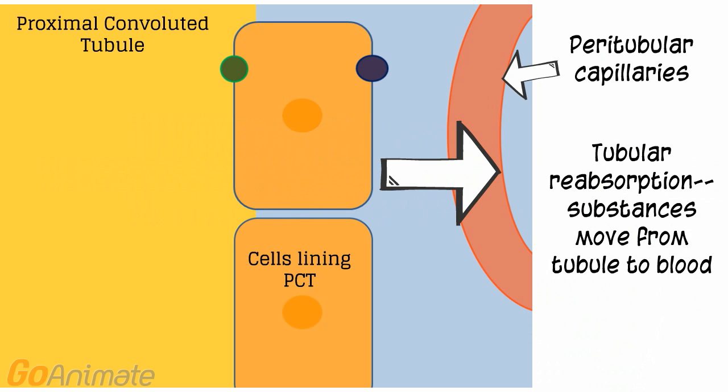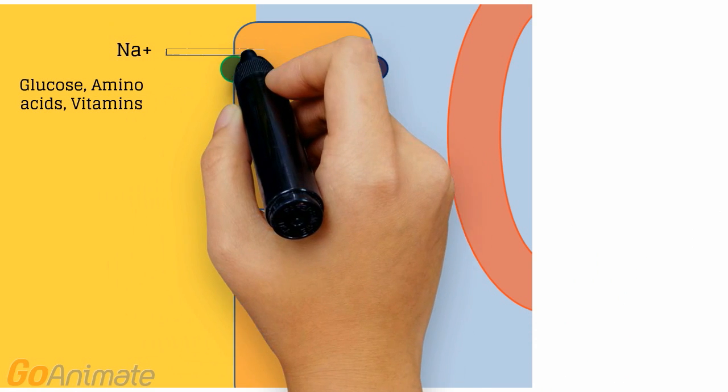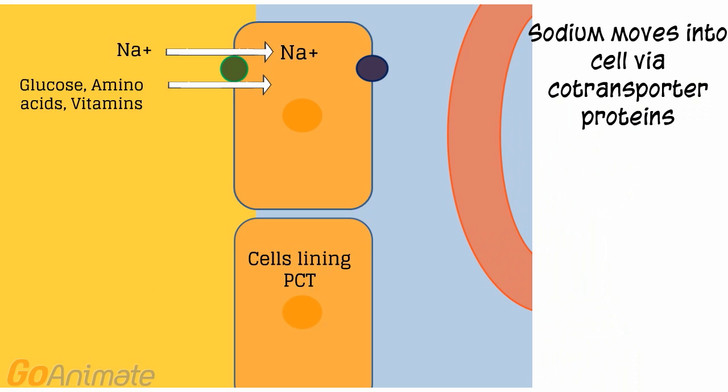Remember that in tubular reabsorption, substances move from the tubule to the peritubular capillaries. Sodium moves from the tubule into the cell by way of co-transporter proteins that also transport glucose, amino acids, and vitamins into the cell. These substances end up back in the blood. These transporters are sometimes called symporters.